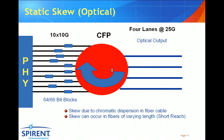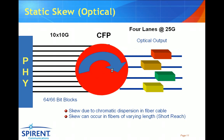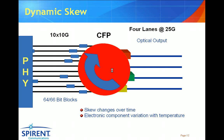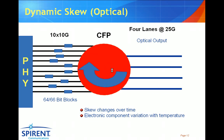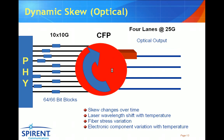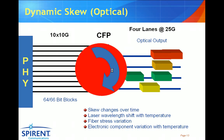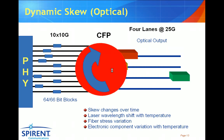In both of these cases, the skew is static — that is, it's constant. Dynamic skew is where the arrival time varies, a little bit like jitter; the skew can change over time. This can occur due to electronic component variation with temperature. On the optical side of the CFP, we can also have dynamic skew where the skew is changing over time. This can be due to wavelength shift with temperature, as the lasers will actually vary depending on temperature. We can also have stress within the fiber cable itself, which can vary the length of the cable and also create skew. Additionally, the electronic components within the CFP can vary their properties with temperature, which can cause skew on the optical output.